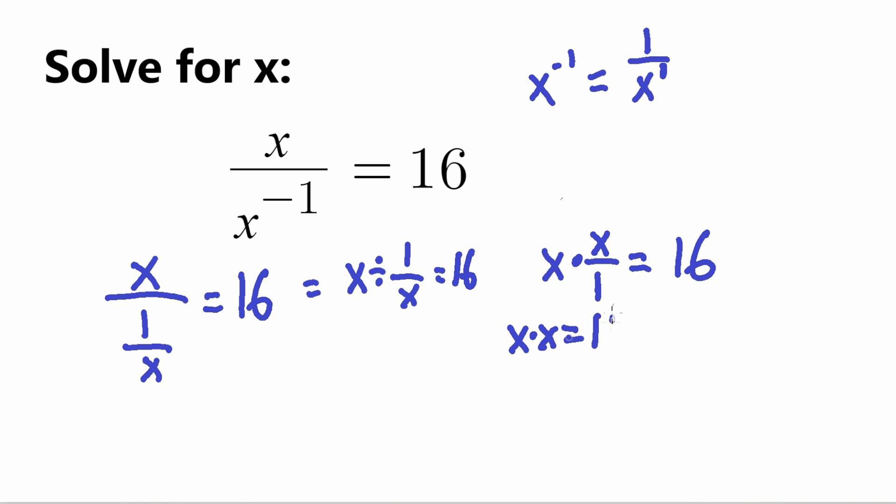So X times X over 1 equals 16. What is X over 1? X over 1 is just X, right? So X times X equals 16. X times X can be rewritten as X squared equals 16.